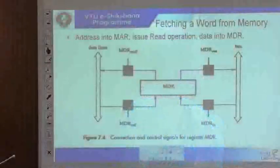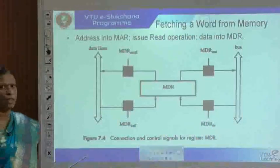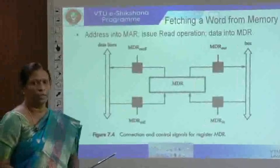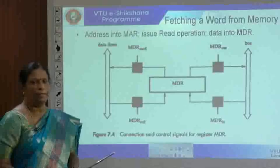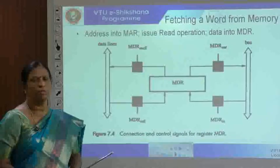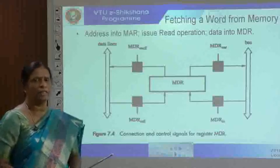In the previous class, we discussed module 5 — the contents related to data communication and the basic processing unit. We began a discussion on the basic processing unit. To continue, we are going to further cover topics like fetching a word from memory, how to store a word into memory, and the complete control sequence for executing a complete instruction.